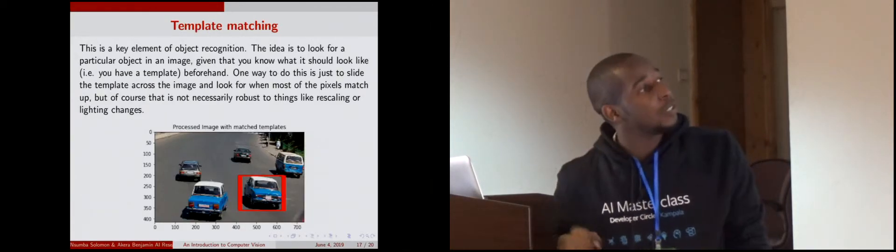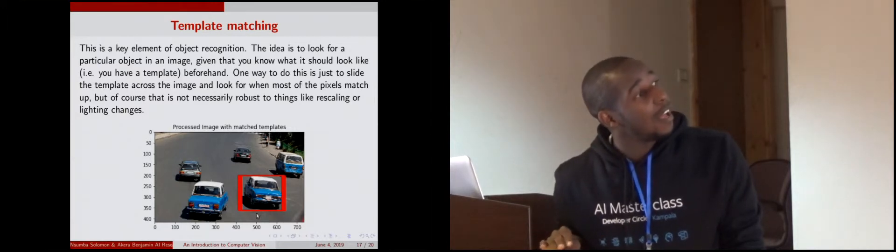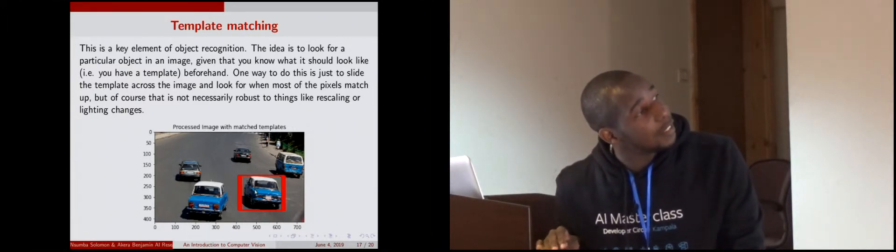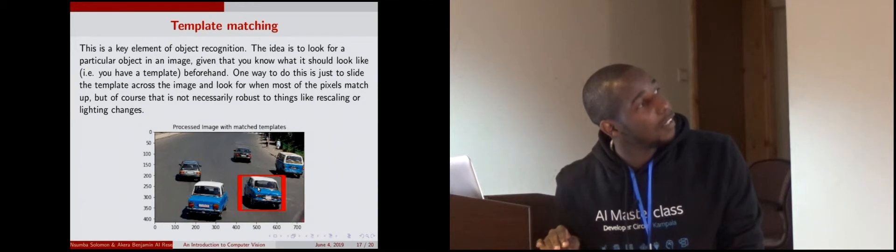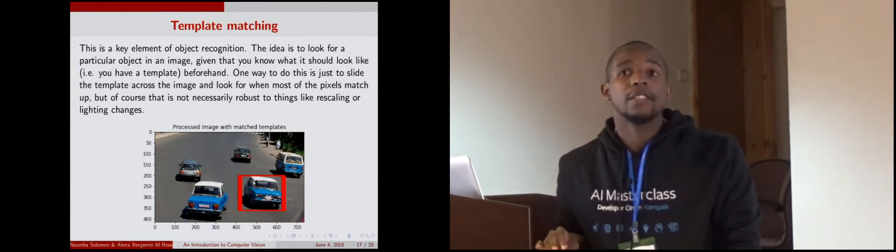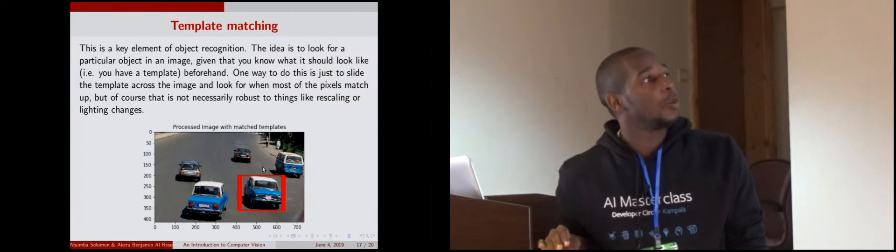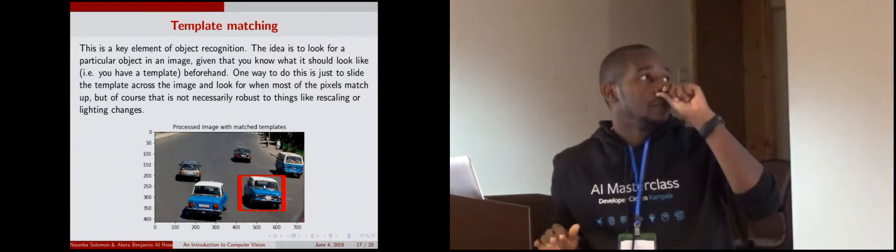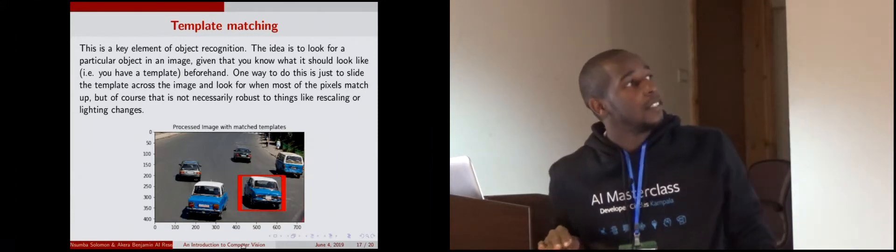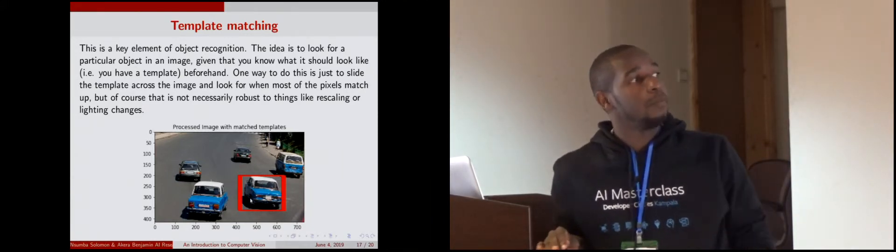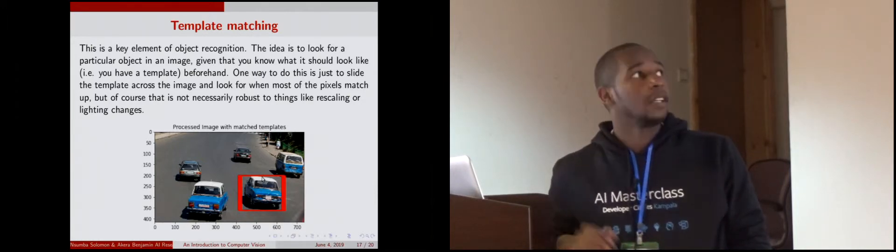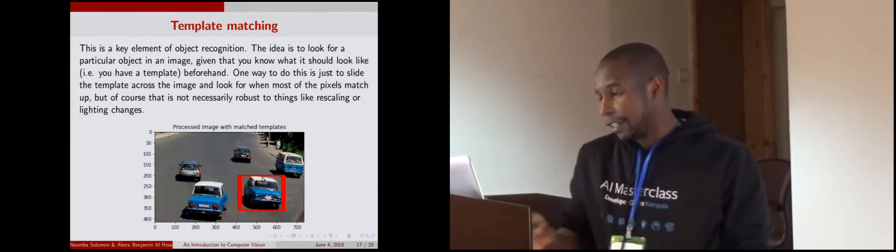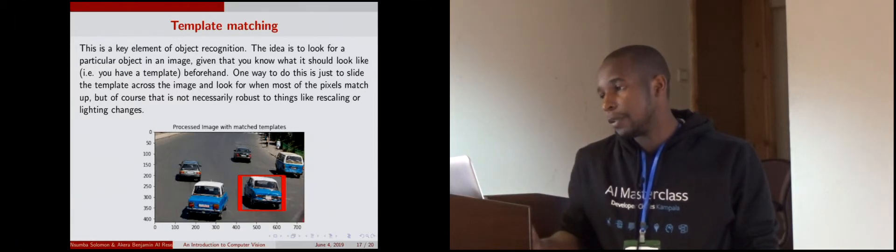Then template matching. These are the taxis that we saw in Addis. If you have this as your template, then you can use it to do object detection across a street. You want to be able to identify this. In your training, this would be like your template that you'll be using to train against, and then you're able to detect whatever object you want.